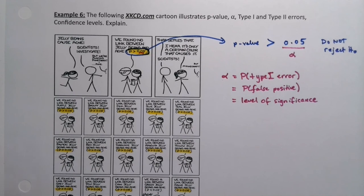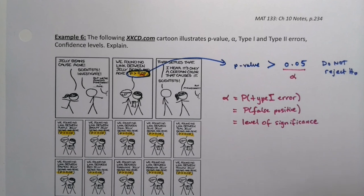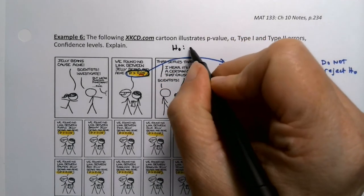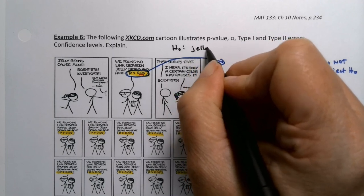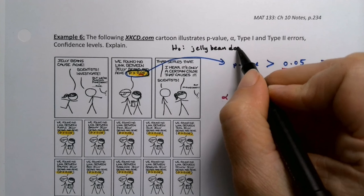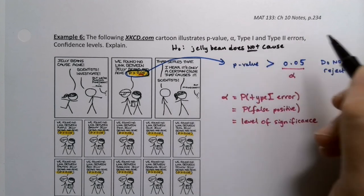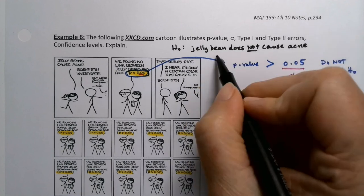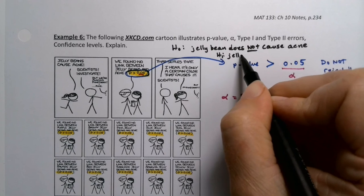Speaking of which, what would be the H0 and the H1 for this particular case? I didn't really establish that. I can do it up here. So H0 would be assuming that whatever color of jelly bean does not cause cancer or acne. Sorry, acne. It was cancer in real life with the M&Ms. And then H1 would be that the jelly bean causes acne.